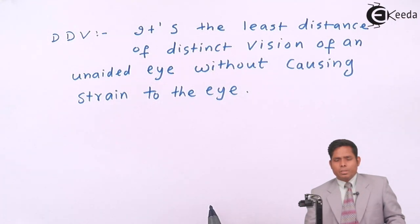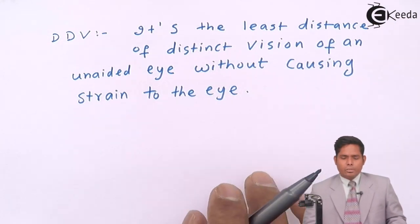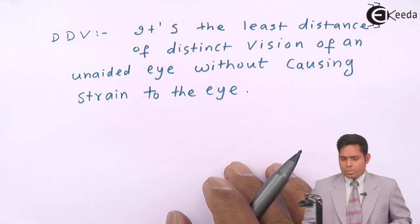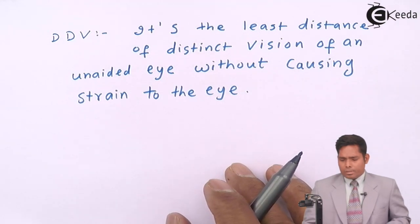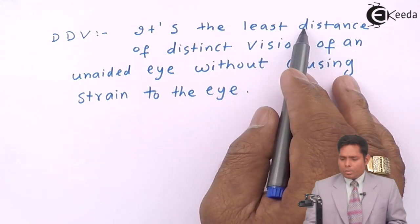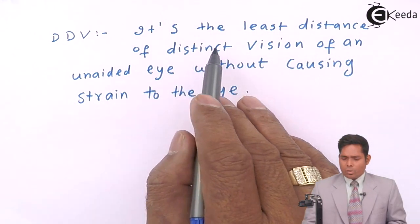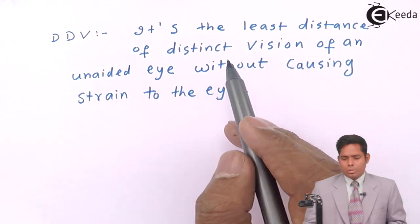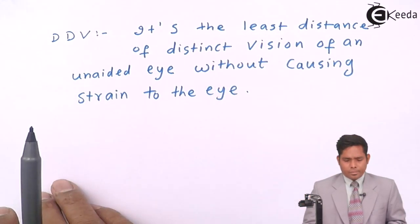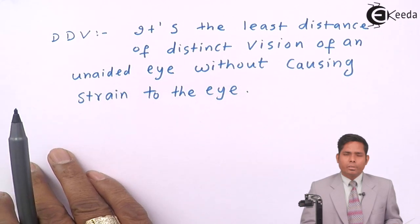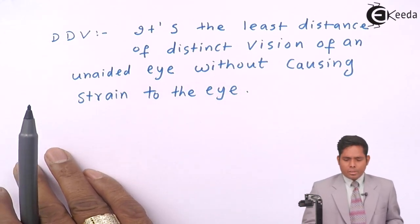DDV is the minimum distance you can bring an object closer and still see it without causing strain to the eye — it is the minimum or least distance the object can be brought nearer to the eye. For a healthy eye this is generally 25 cm.